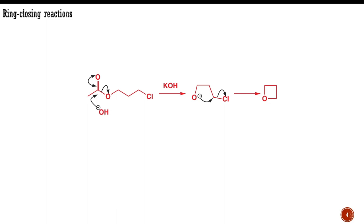Oxetane, for example, is made by adding 3-chloropropyl acetate to hot potassium hydroxide. The first step in this reaction is the hydrolysis of the ester. The alkoxide produced then undergoes an intramolecular substitution reaction to yield oxetane.